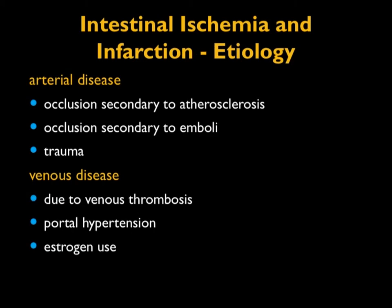No talk about the acute abdomen would be complete without discussing intestinal ischemia and bowel infarction, which can be arterial — occlusion secondary to atherosclerosis in an older population, or occlusion due to emboli often in a younger population, or trauma. Also venous disease: venous thrombosis, portal hypertension, patients on estrogen.